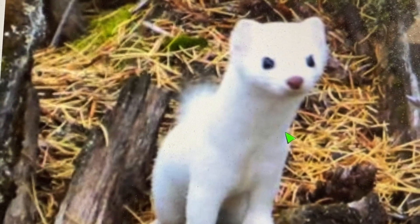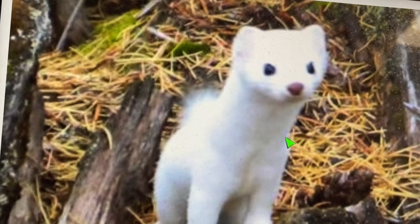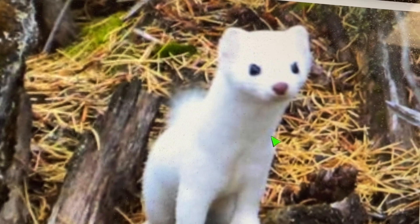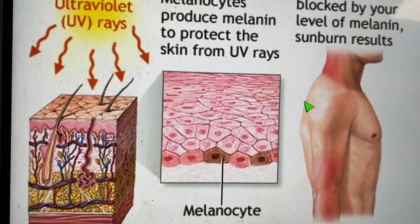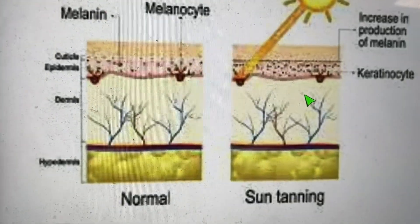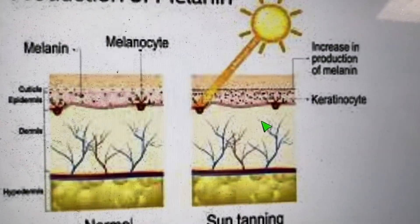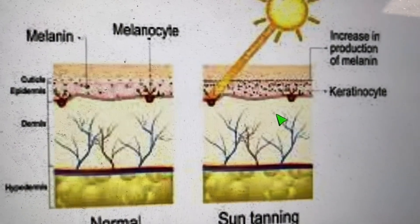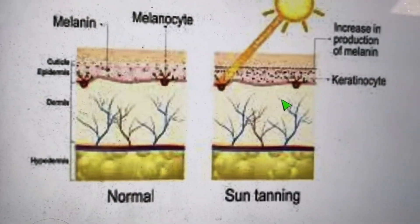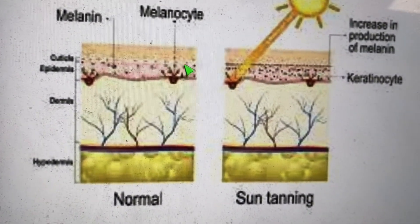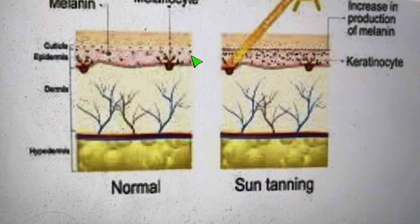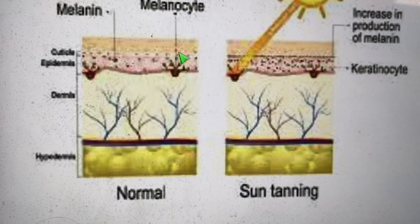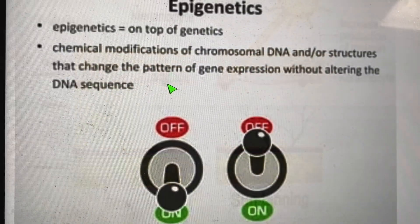Animals around here actually switch genes on and off based on environmental factors like the amount of light or temperature — look how cute that ermine is. That's not so foreign to us either: suntans are basically gene switches that turn melanocytes on to make more melanin. Melanin scatters light, and the more melanin you have, the more light you can handle before you get burned. People with very fair skin don't make a lot of melanin and are more prone to sunburns, but even fair-skinned people can get darker because light stimulates melanin production — it's a switch.